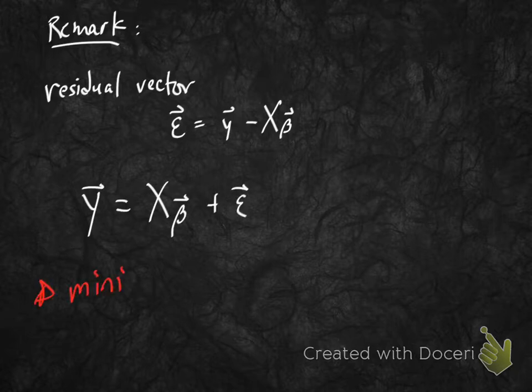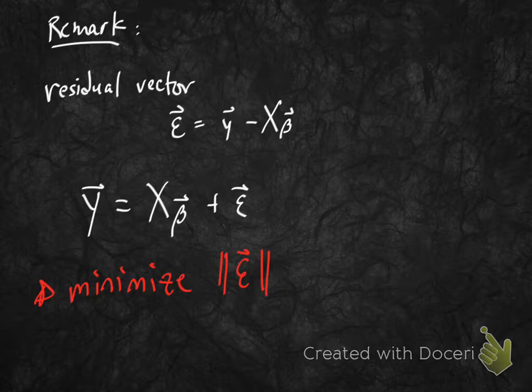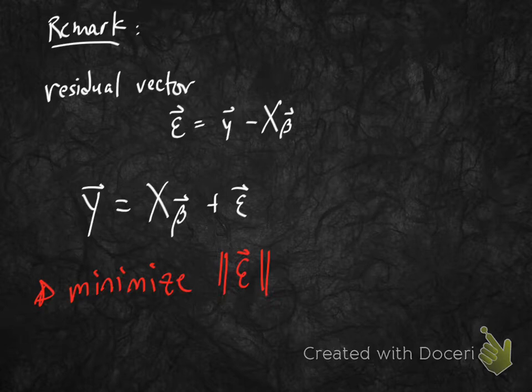There's a notion statisticians introduce called the residual vector: ε = y − Xβ, so that y = Xβ + ε. The idea is we want to minimize the length of this residual vector ε — but that's exactly what we're doing when we find a least squares solution to Xβ = y. We're minimizing the length of the difference.